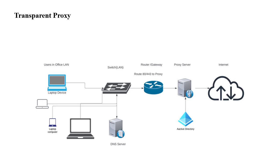If access is allowed, it connects to the internet. One major difference to note in the transparent proxy scenario is that the user machine has direct access to the DNS server. In the explicit proxy scenario, by contrast, internet access can still be provided without a LAN-side DNS requirement.